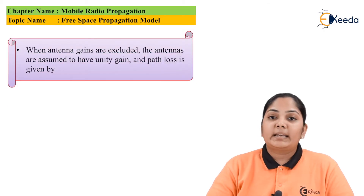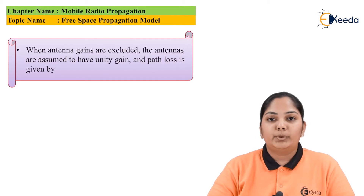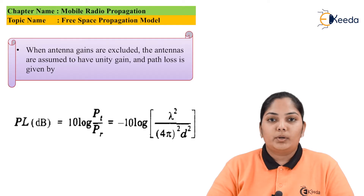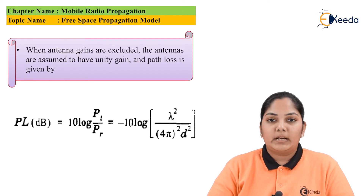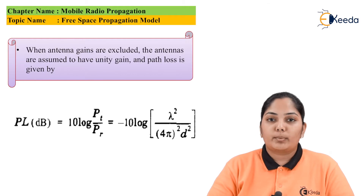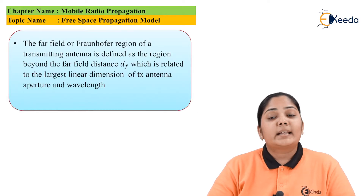When the antenna gains are excluded and the antennas are assumed to have unit gain, the formula reduces to: PL (in dB) = 10 log(Pt / Pr) = −10 log(λ² / ((4π)² × d²)).